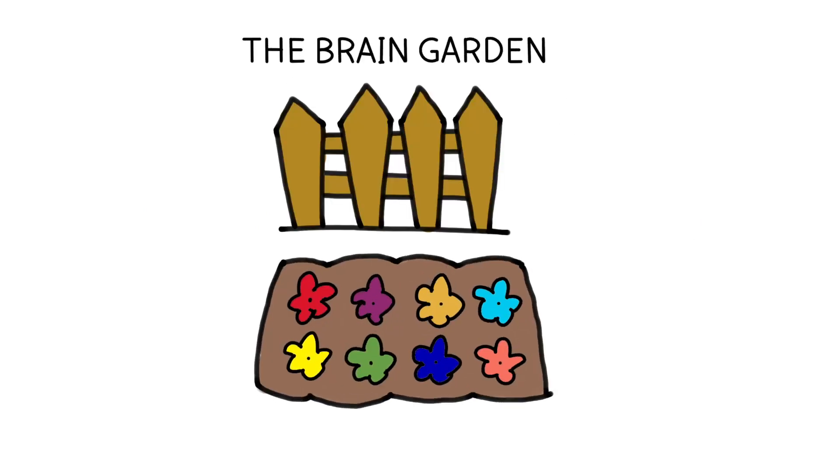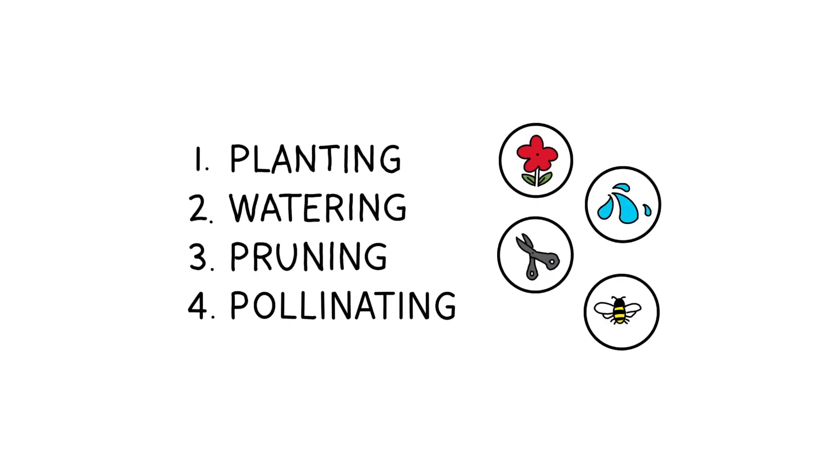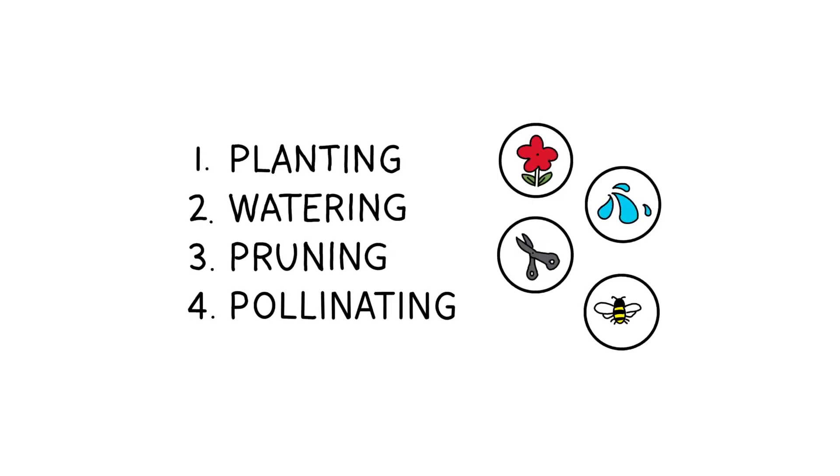Imagine our brain as a garden where knowledge grows. Just like plants, our brain needs certain elements for effective learning. Let's dive into the brain garden and discover the learning process.